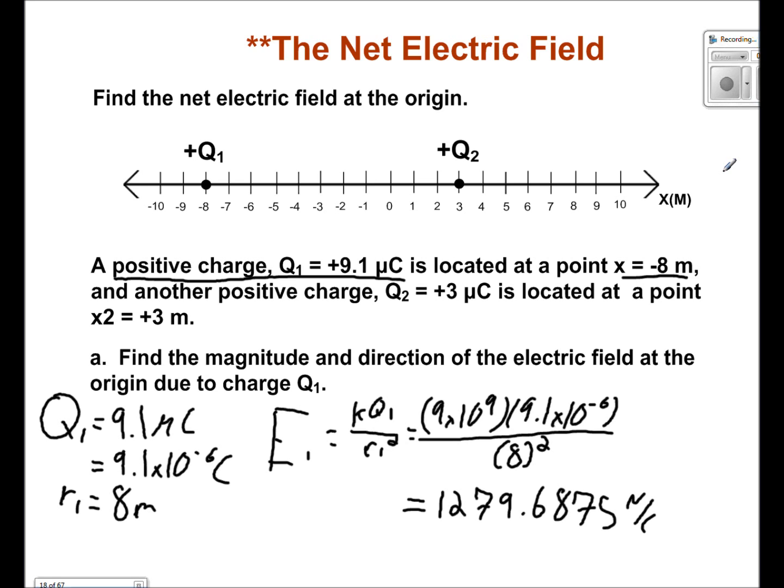As for the direction, we all know that positive charges will push away from them. So at the origin, E1 has a direction going to the right.